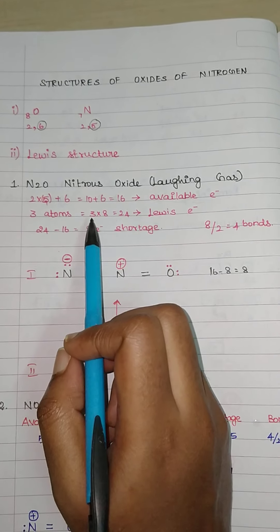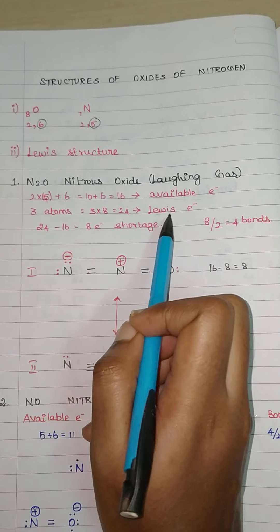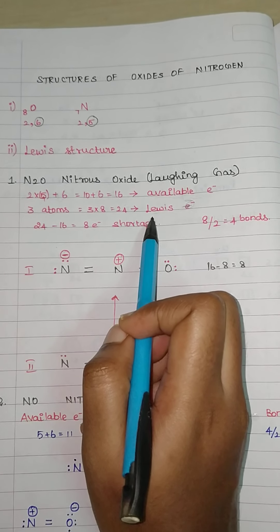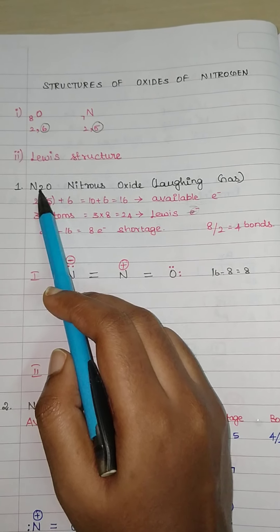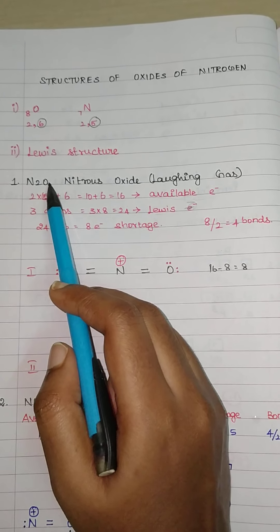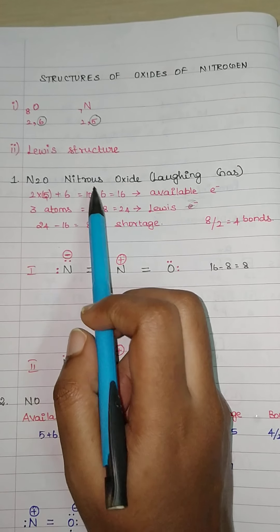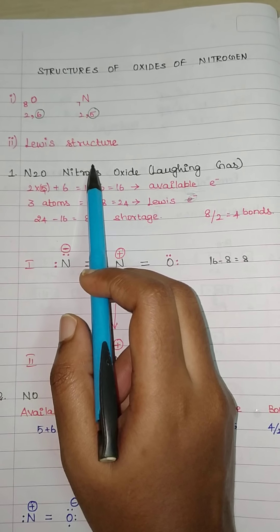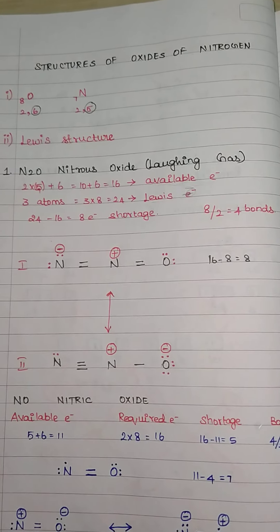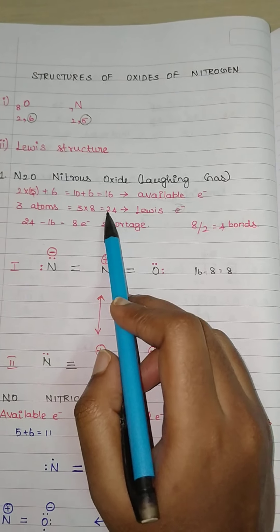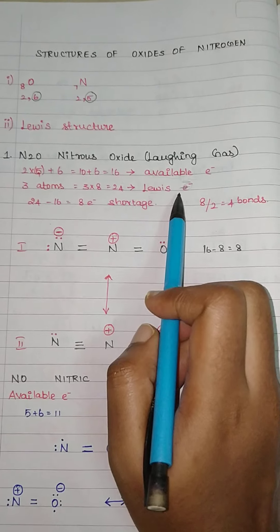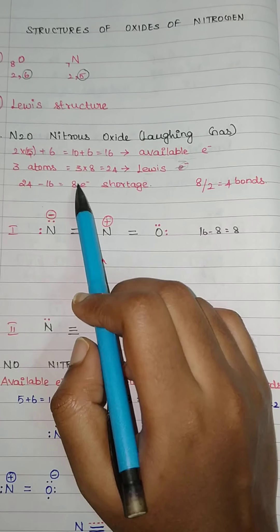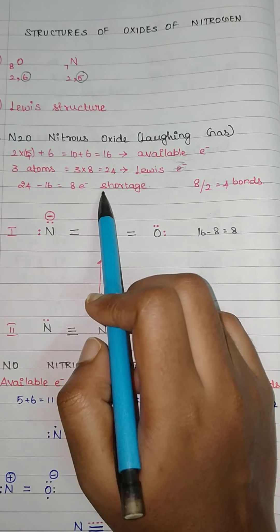Now, how many electrons do we require for writing this Lewis structure? You have 2 nitrogen plus 1 oxygen — that is 3 atoms. For writing the Lewis structure we always follow the octet rule. Octet means each atom should have 8 electrons to complete its octet. So 3 into 8 will be 24. For writing the Lewis structure you require 24 electrons but we have only 16, so we are having a shortage of 8 electrons — 24 minus 16 equals 8 electrons short.